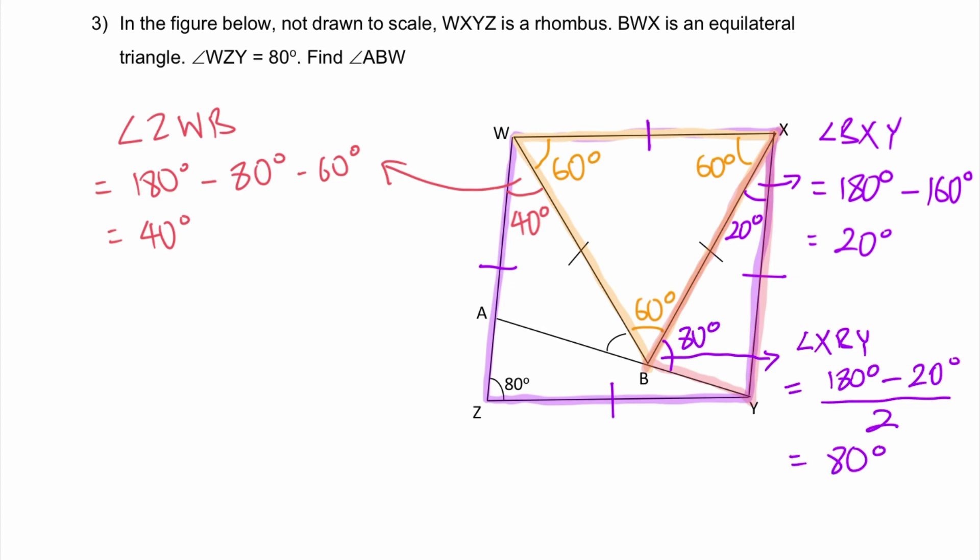Now we can finally figure out the answer using angles on a straight line. So 80, 60 and here will be 180 degrees over here. Angle A, B, W: 180 degrees minus 60 degrees minus 80 degrees, and that will give us the answer of 40 degrees.